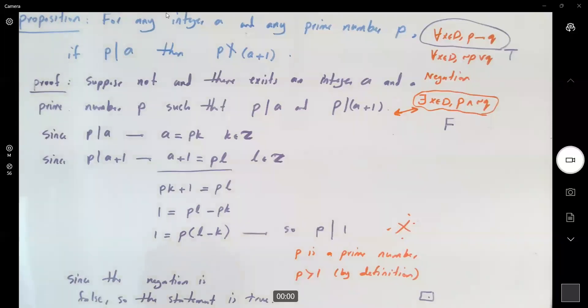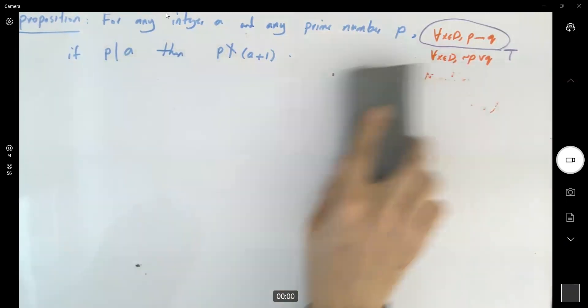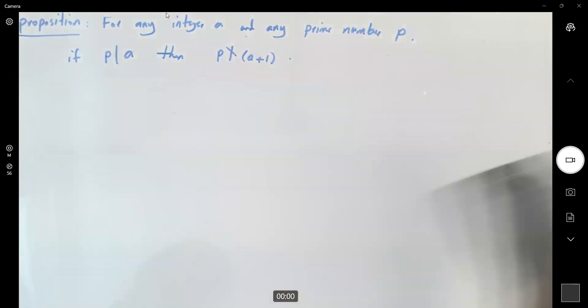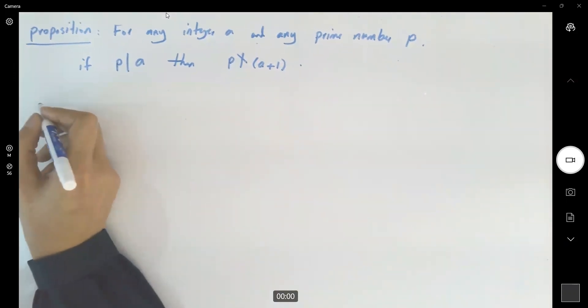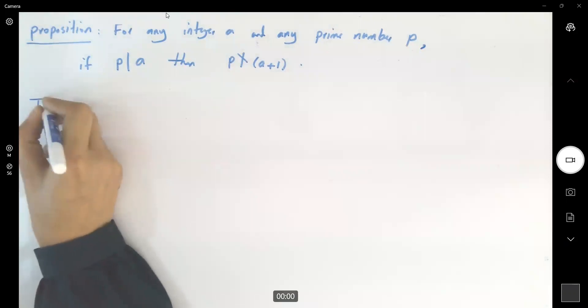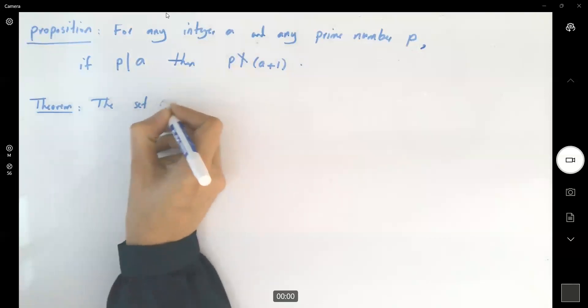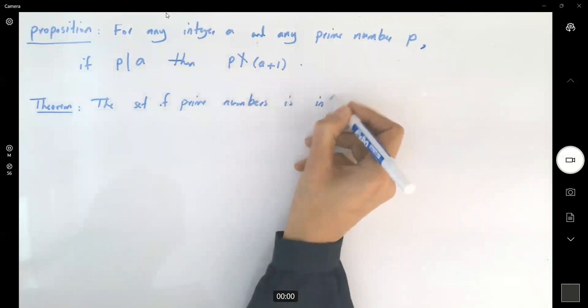Now we're going to use this proposition and prove that the set of prime numbers is actually an infinite set. So theorem: The set of prime numbers is infinite.